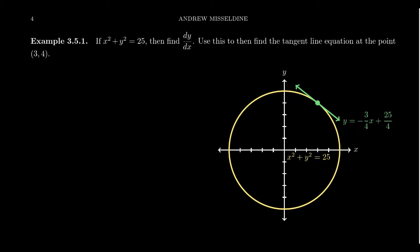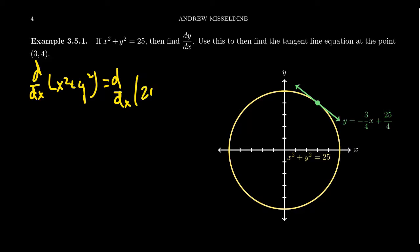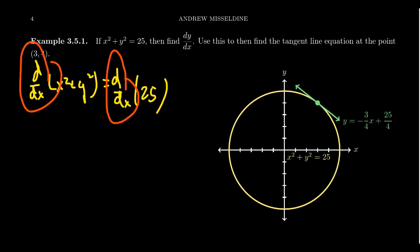You'll notice (3, 4) is a point on this circle. Following the strategy we did previously, we're going to take the derivative of the left hand side x squared plus y squared, and take the derivative of the right hand side. In both situations we're taking the derivative with respect to x, using the fundamental truth that if we apply the same function to both sides of an equation, equality is still preserved.